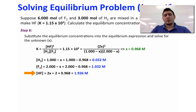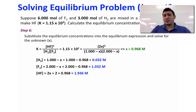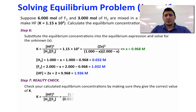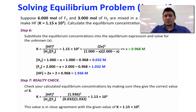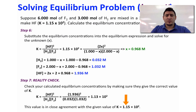The equilibrium concentration of HF is 1.936 M. Now that we have the equilibrium concentrations, we can do a reality check by using these concentrations to calculate the equilibrium constant. The value we find is 1.13 times 10 to the power 2, which is very close to the given value of K, 1.15 times 10 to the power 2.